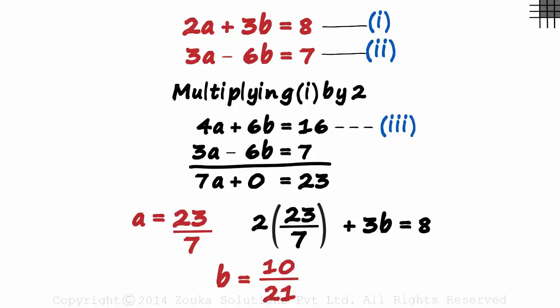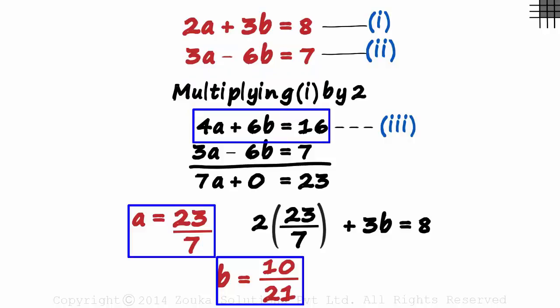So in the third method, we just modified an equation and got the values of the variables in just two steps. And yes, sometimes we may even need to modify both equations.